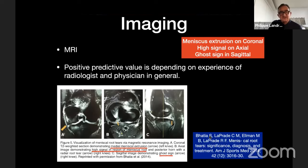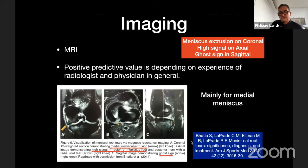MRI is the gold standard for diagnosis, with three main signs: meniscus extrusion on the coronal view; the vertical linear defect; the high signal on the axial view; and the famous ghost sign. These are mainly for the medial meniscus. For the lateral meniscus it is much more difficult — it must always be explored attentively and accurately. You need a good radiologist and high degree of suspicion yourself when reviewing the MRI.